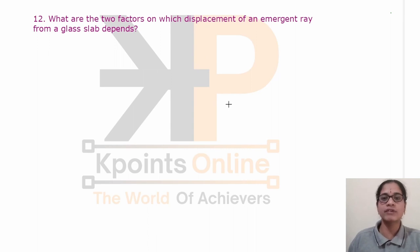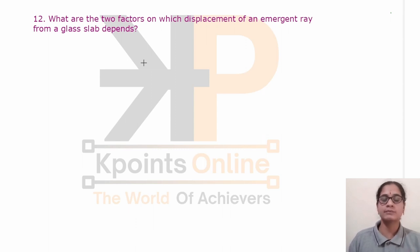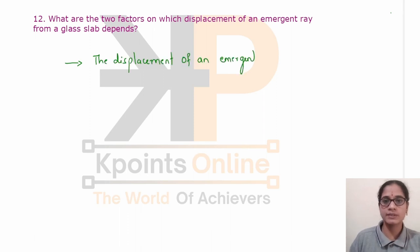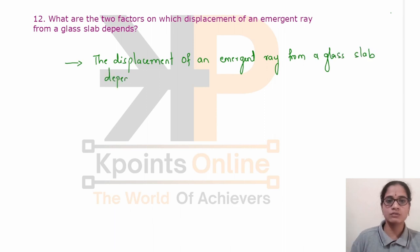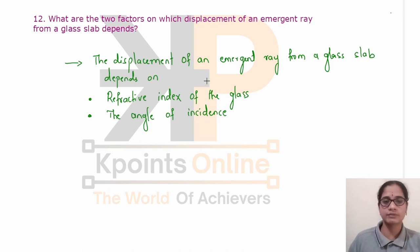What are the two factors on which displacement of an emergent ray from a glass slab depends? The lateral shift or lateral displacement depends on the thickness of the glass slab, the angle of incidence, and the refractive index of the glass slab. The more the angle of incidence, the more is the lateral shift.